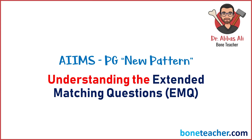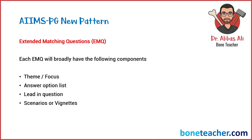For this reason, I have taken this particular example to help you understand it even better. The first thing I want you to understand is that each extended matching question type will have four things. Different EMQs will have different numbers of scenarios — some can have one, some can have two, and some can have more. Let's try to understand each of these parts of the question.